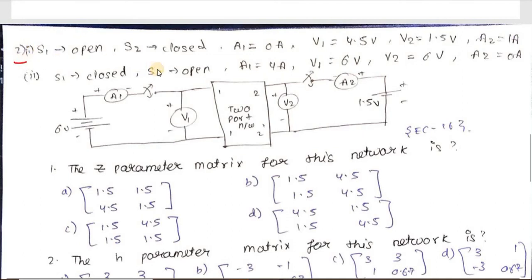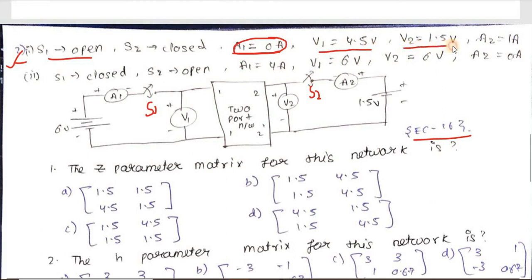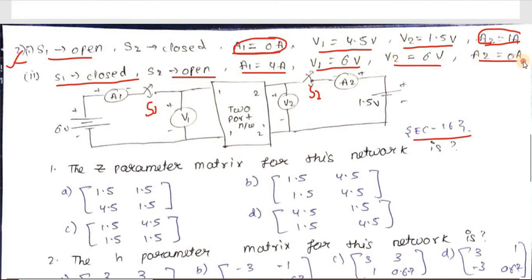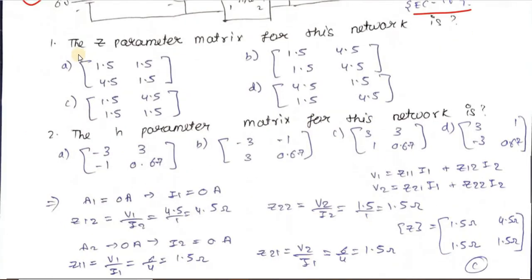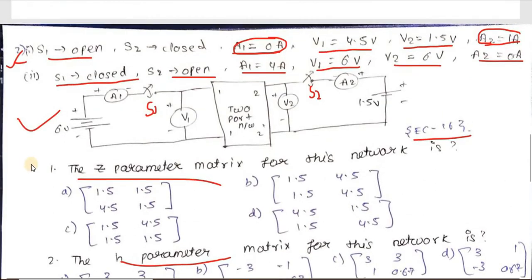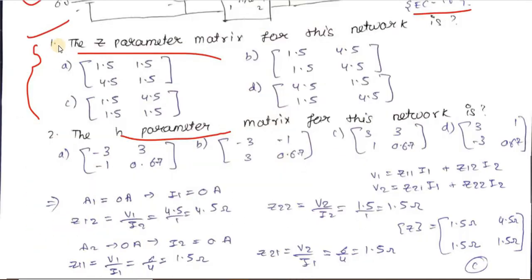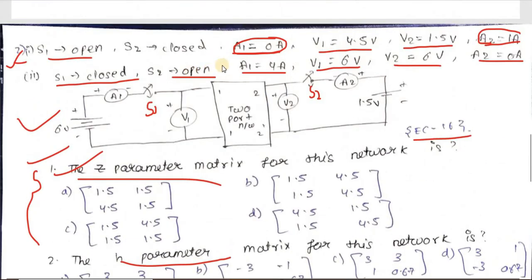Now for the second sum, EC 2016: when switch S1 is open and S2 is closed, i1 = 0 A, v1 = 4.5 V, v2 = 1.5 V, i2 = 1 A. When S1 is closed and S2 is open, i1 = 4 A, v1 = 6 V, v2 = c V, i2 = 0 A. The question asks for the Z-parameter and h-parameter. Using our trick, we find Z first.